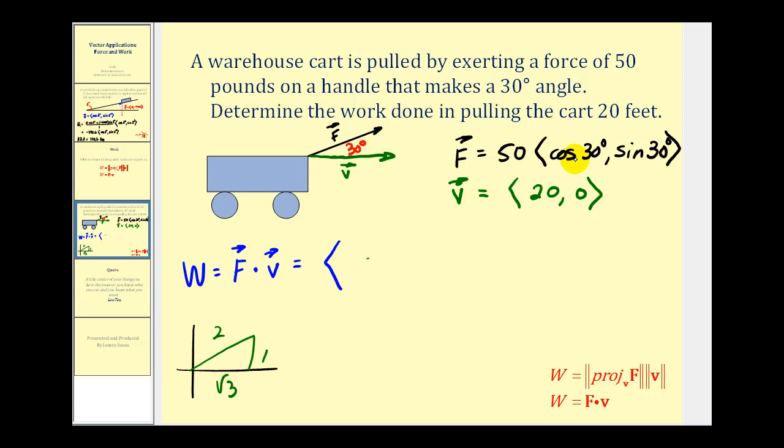So fifty times square root three over two would be twenty-five square root three. The sine of three degrees is one-half. Fifty times one-half would be twenty-five. And we're going to dot this with the vector twenty, zero. So we'd have twenty-five square root three times twenty. That would be five hundred square root three plus zero. So this is the amount of work done in pulling the cart twenty feet.